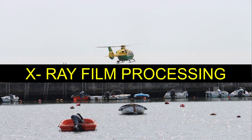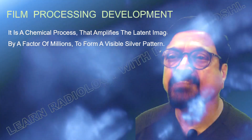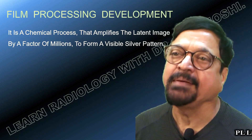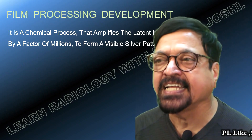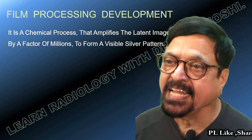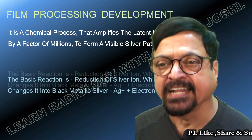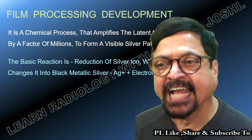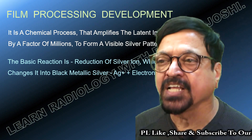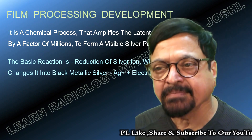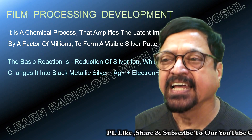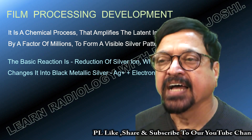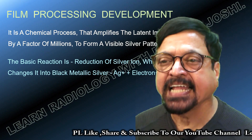Now let us get going to the X-ray film processing topic today. We can also call this darkroom processing or wet processing. The film processing development is a chemical process that amplifies the latent image by a factor of a million to form a visible silver pattern. Silver is black when we see it on the film. The basic reaction is reduction of silver ions, which changes to black metallic silver — from ionic silver to metallic silver.